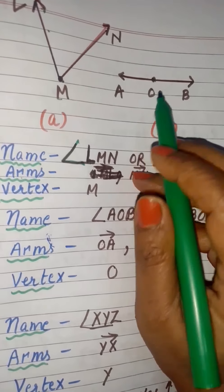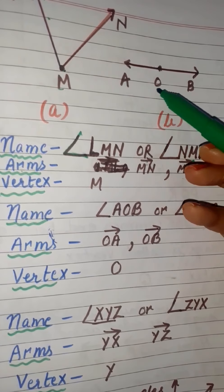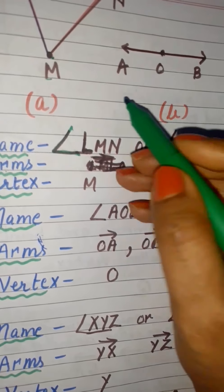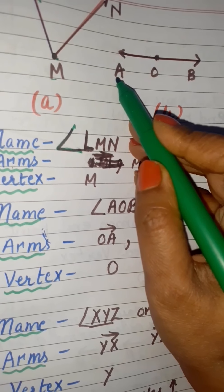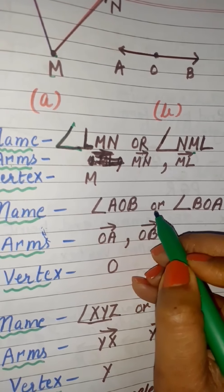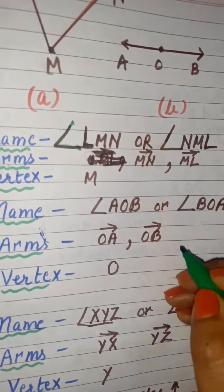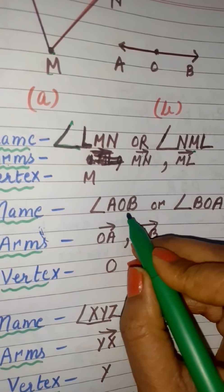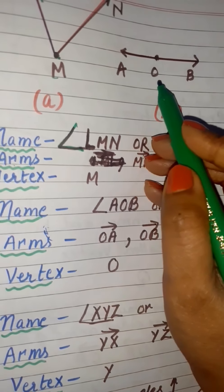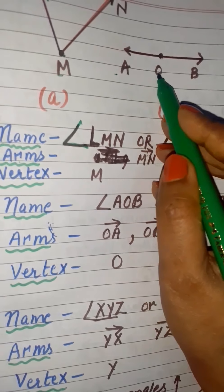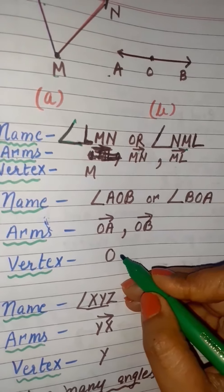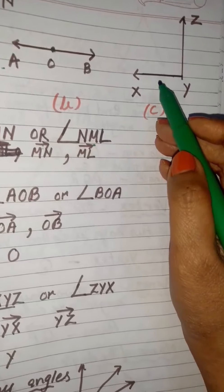In the second example, the vertex is O, because OA and OB are the two rays. We name this angle AOB or BOA — O is the common end point and vertex. The arms of the angle, starting from the vertex, are OA and OB.